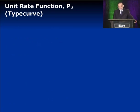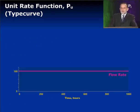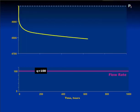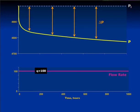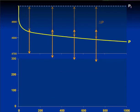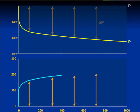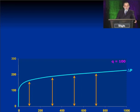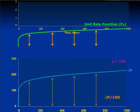First, the unit rate function. If we have a well flowing at a constant rate, we can calculate its pressure profile — the pressure will decline with time. But more often in reservoir engineering, we're interested in the pressure drop, the delta P. So let's plot the delta P versus time — that's an increasing function. That's the pressure drop for a constant rate of, say, 100 barrels a day. What's more useful is the pressure drop per unit rate, so let's take this delta P and divide by 100. That gives us the unit rate function.